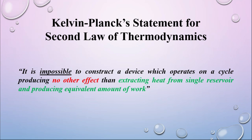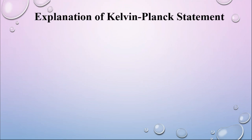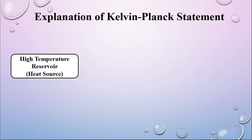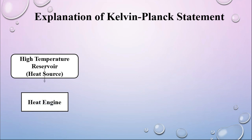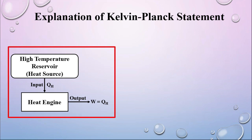Now let's try to understand this with an example — an explanation of the Kelvin-Planck statement. Let us say we have a high temperature reservoir, also called a heat source, and we have an engine. This heat source supplies QH amount of heat as input to the engine, and the engine produces output W, that is work done, equal to the amount of heat supplied, QH. As per the Kelvin-Planck statement, this is impossible.